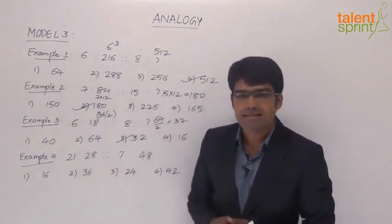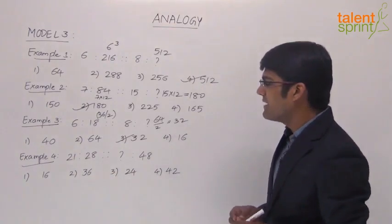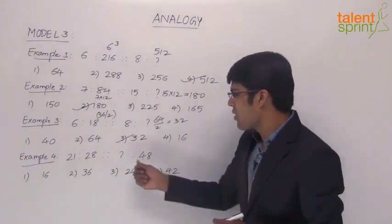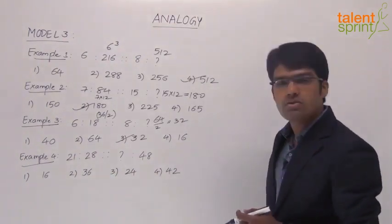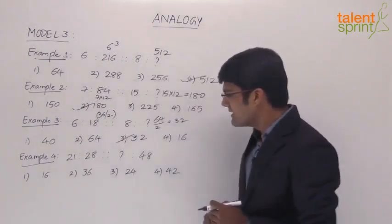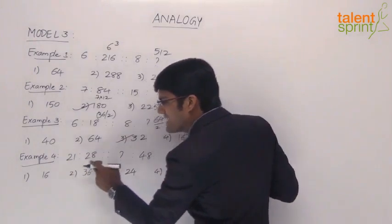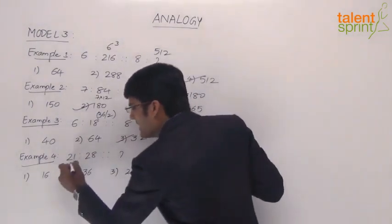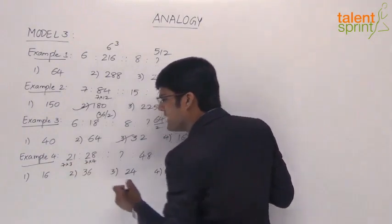Let's now look at the last example here, Example 4. 21 is to 28, then what is to 48? 21 is to 28. So try to establish the relationship between these two numbers. This is 7 into 3 and 7 into 4. Yes or no? 7 times 3 and 7 times 4.